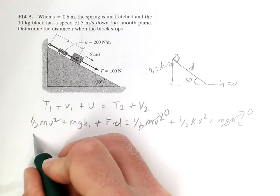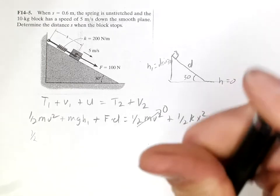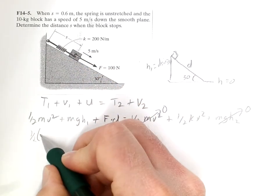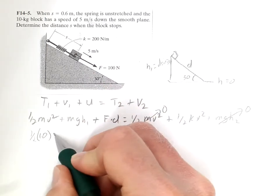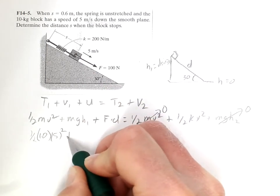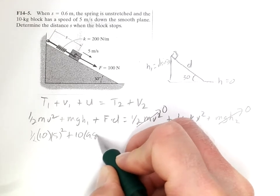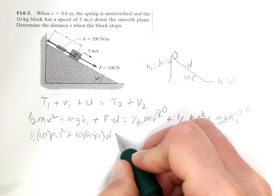Coming back here, we've got 1 half. So, if m is 10, v is 5, m is 10, g is 9.81, H1 is D sine 30.